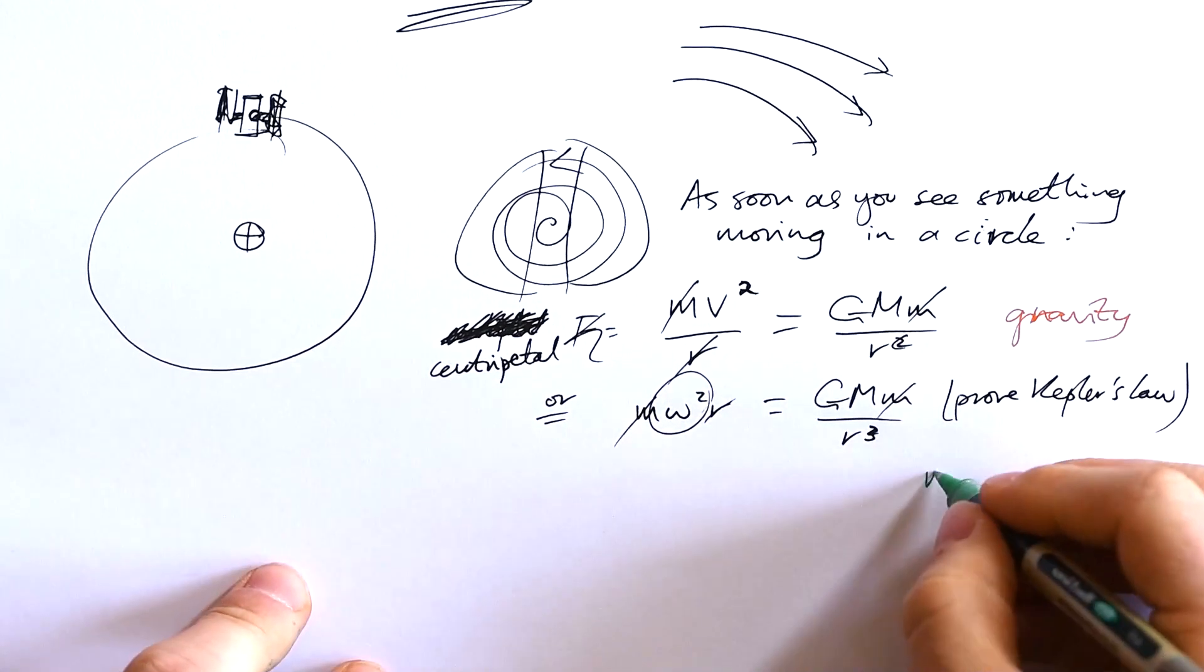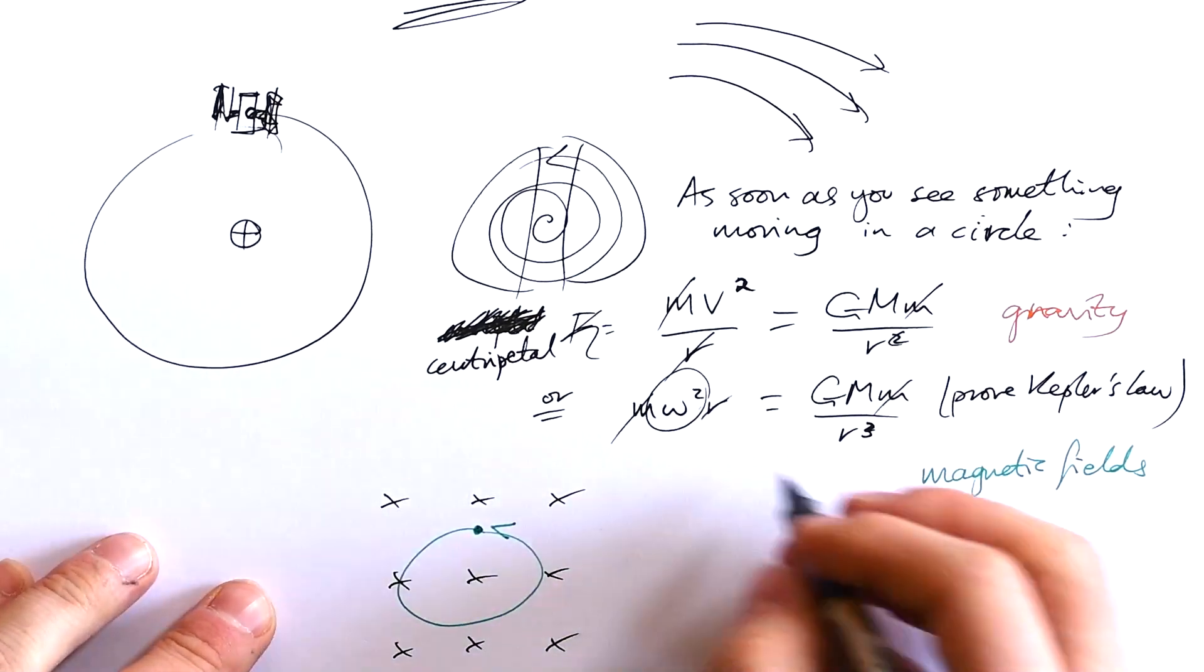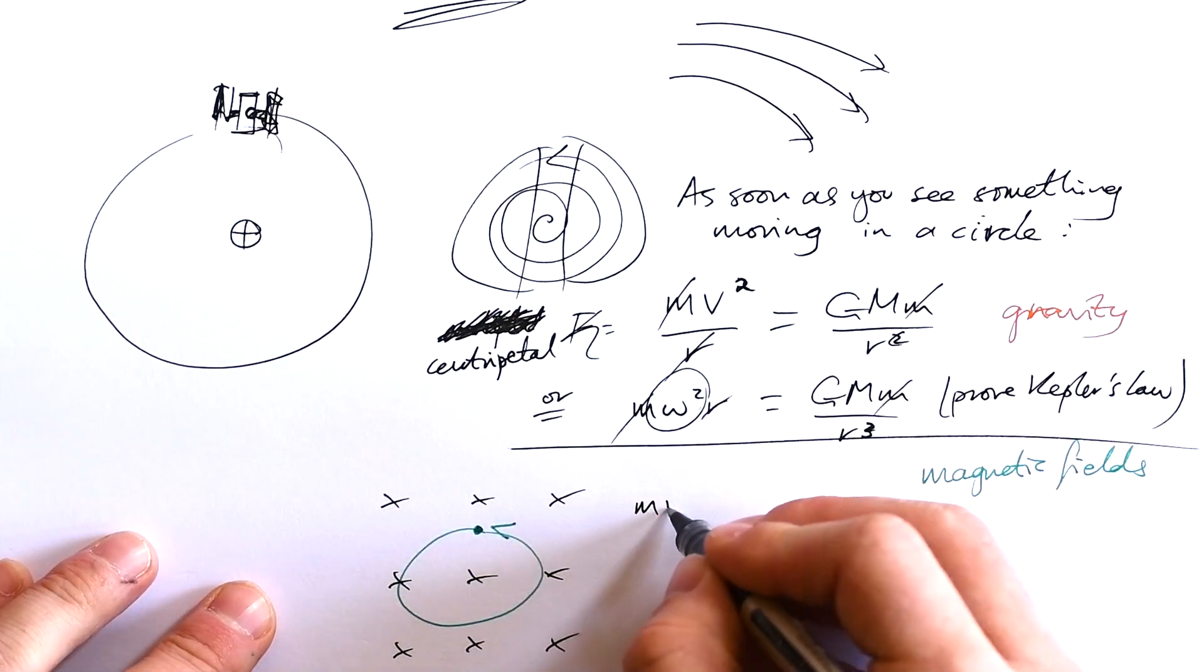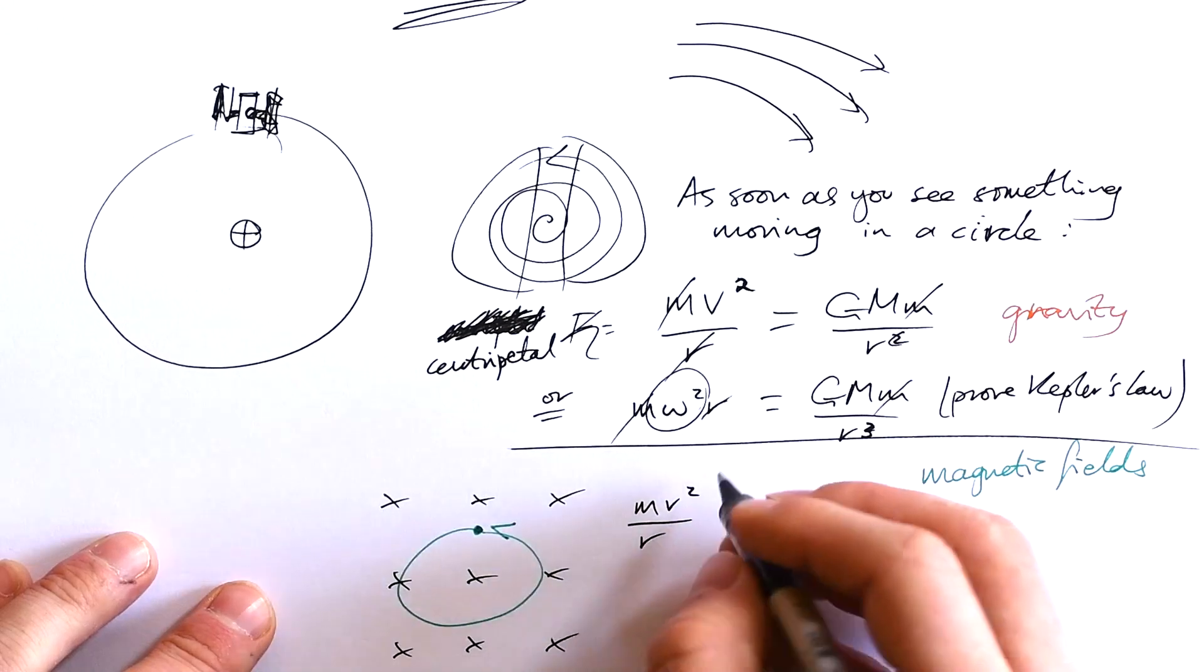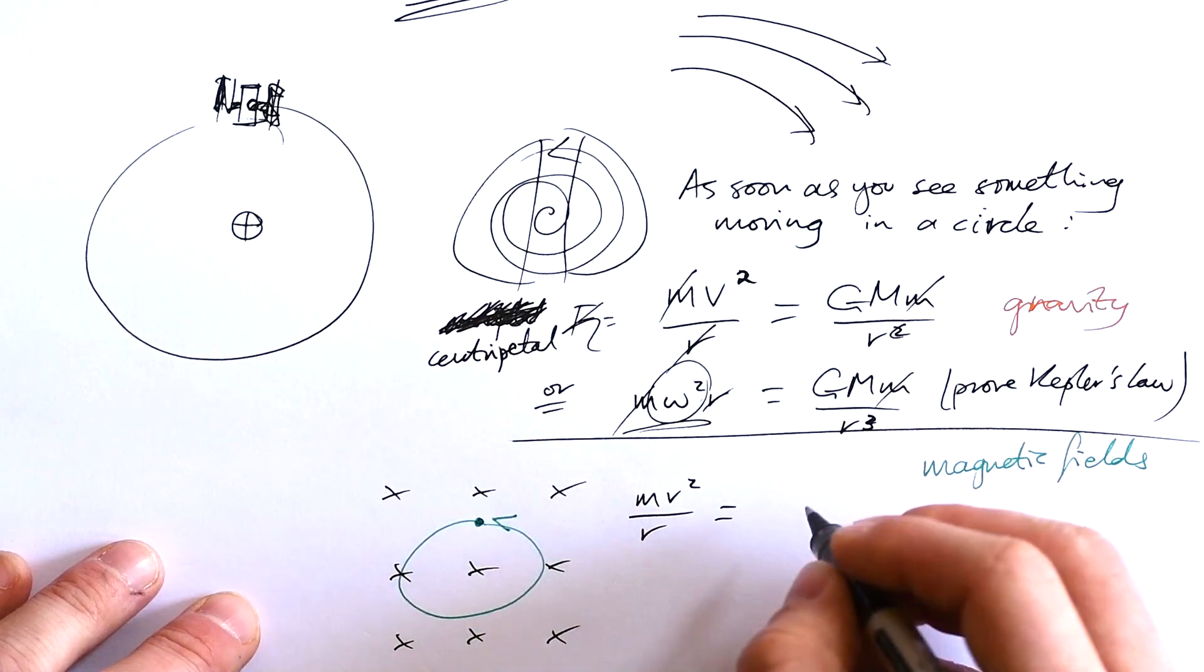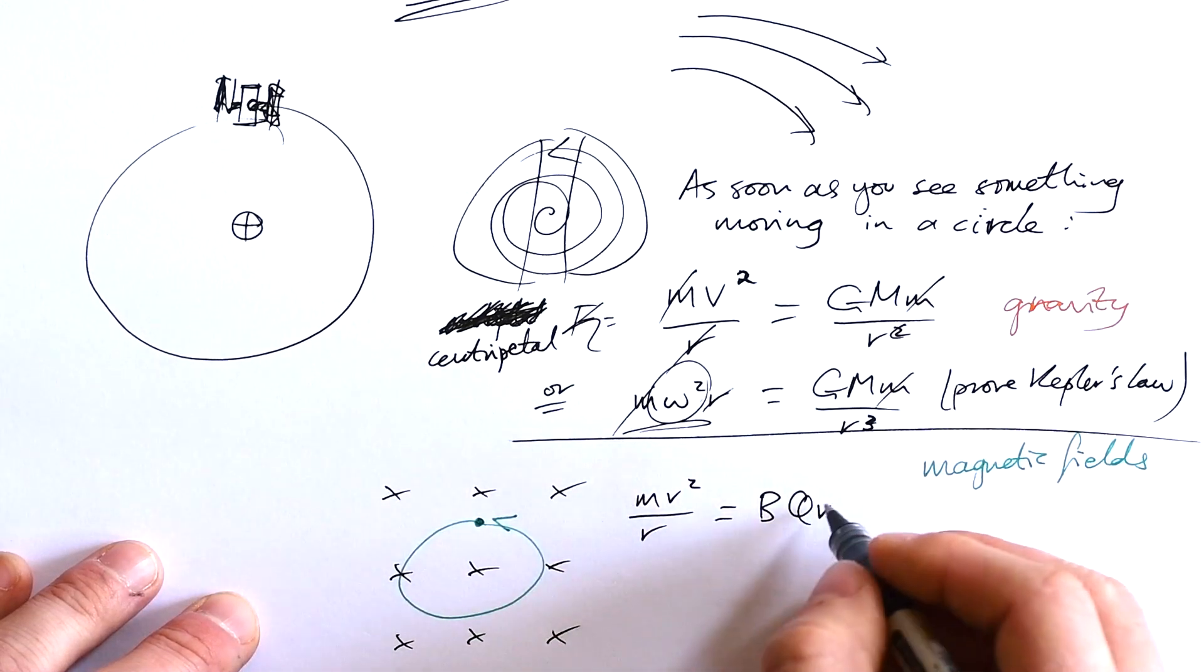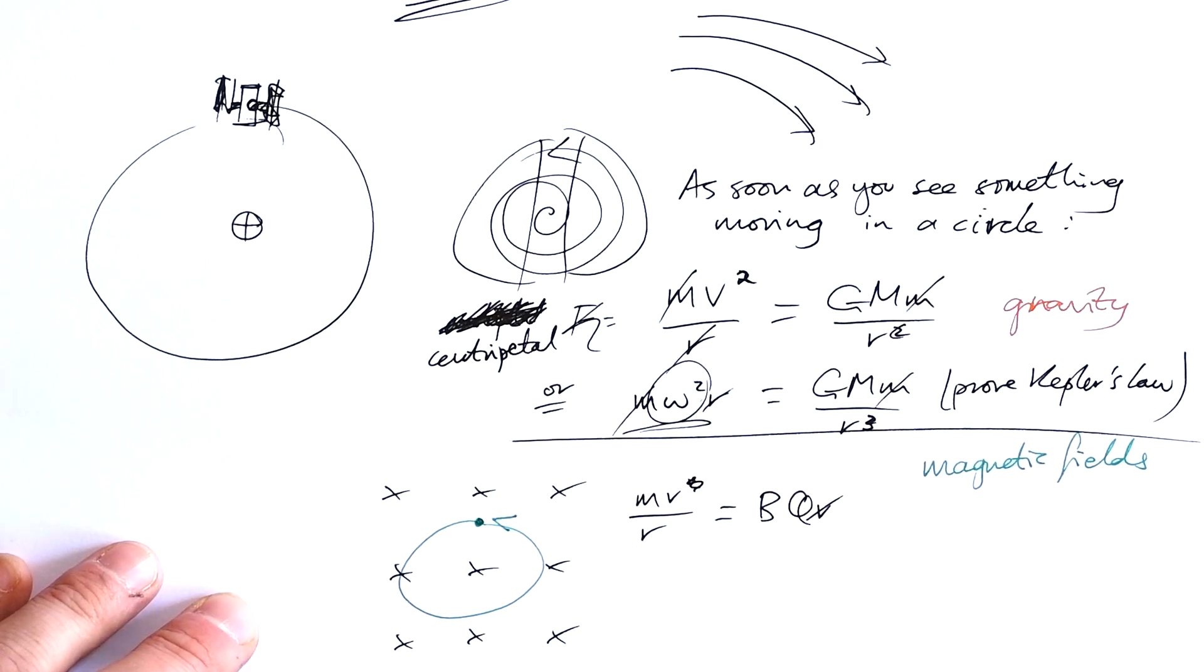But the other time that you see it really is magnetic fields. A charged particle in a magnetic field goes in a circle, mv squared over r. Again, you're less likely to have to use m omega squared r with magnetic fields. You still can, though. And what is this equal to? Well, it's equal to Bqv. Again, one of the v's cancels, and we can find out what the radius of the orbit depends on.